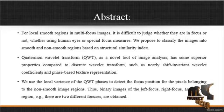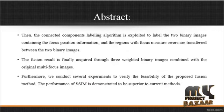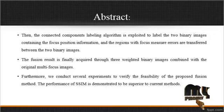We use the local variant of the QWT phases to detect the focus positions of the pixels belonging to the non-smooth image regions. Thus binary images of the left focus, right focus, and smooth regions — the two types of focus — are obtained. Then the Connected Components Labeling Algorithm is exploited to label the two binary images containing the focus position information, and the regions with focus measure errors are transformed between the two images. The fusion result is finally obtained through three weighted binary images combined with the original multi-focus images.